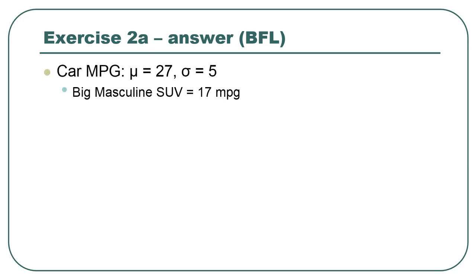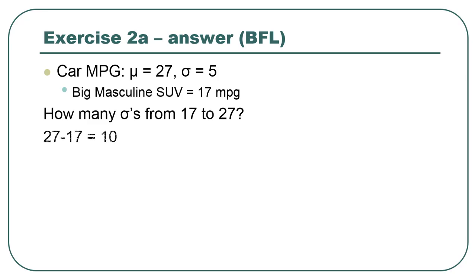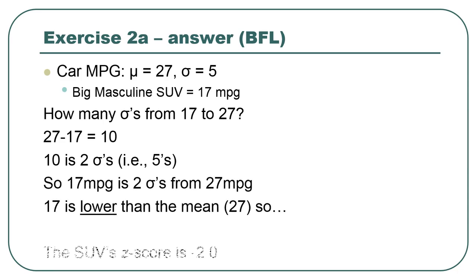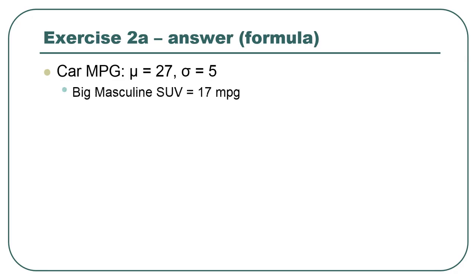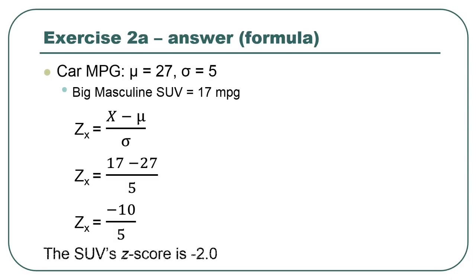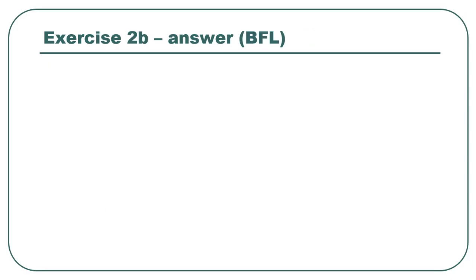For the SUV getting 17 miles per gallon: how many standard deviations from 17 to 27? That's 10 points, which is two standard deviations since the standard deviation is 5 — so negative 2.0. Working that out with the formula: z = (x − μ)/σ = (17 − 27)/5 = −10/5 = −2. For the small pretentious hybrid at 42 miles per gallon: 15 points above the mean, which is three standard deviations, so the z-score is positive 3.